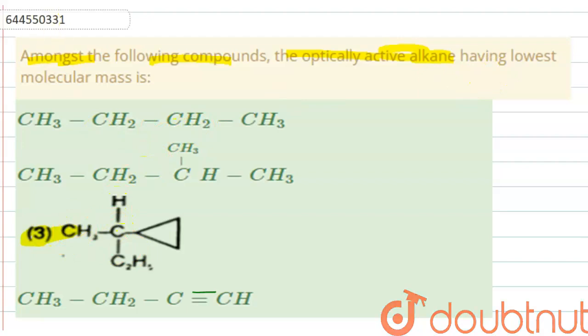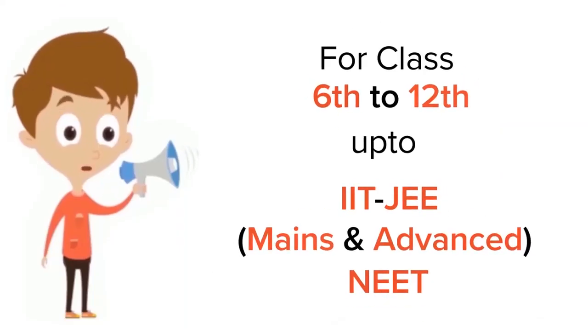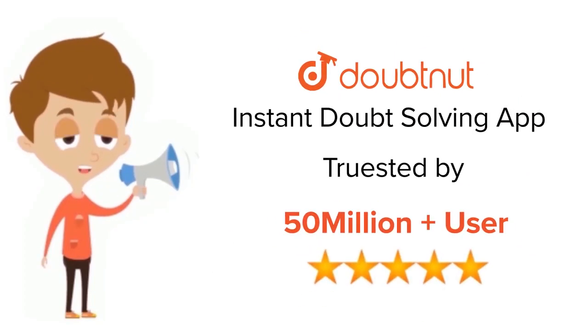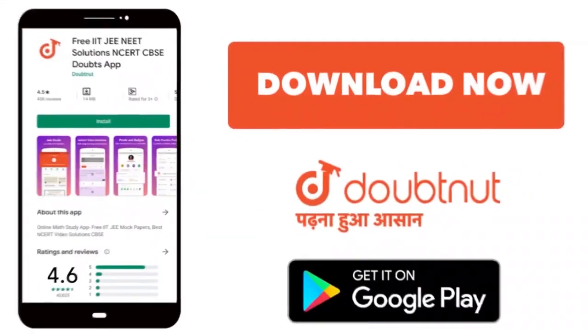Option 3 is the correct option. For class 6 to 12, IIT-JEE and NEET level, trusted by more than 5 crore students. Download Doubtnet app today.